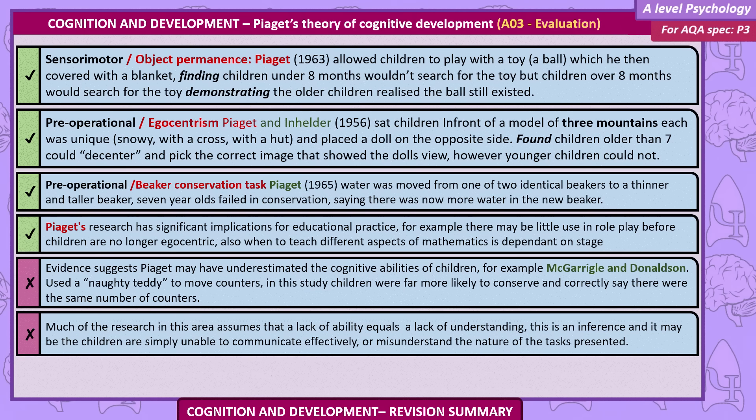Pre-operational: Beaker conservation task. Water was moved from one of two identical beakers into a thinner and taller beaker. Seven-year-olds failed at conservation, saying there was now more water in the new beaker. Piaget's research has had significant implications for educational practice — for example, there might be little use in role play before children are no longer egocentric, and when to teach different aspects of mathematics is dependent on stage.